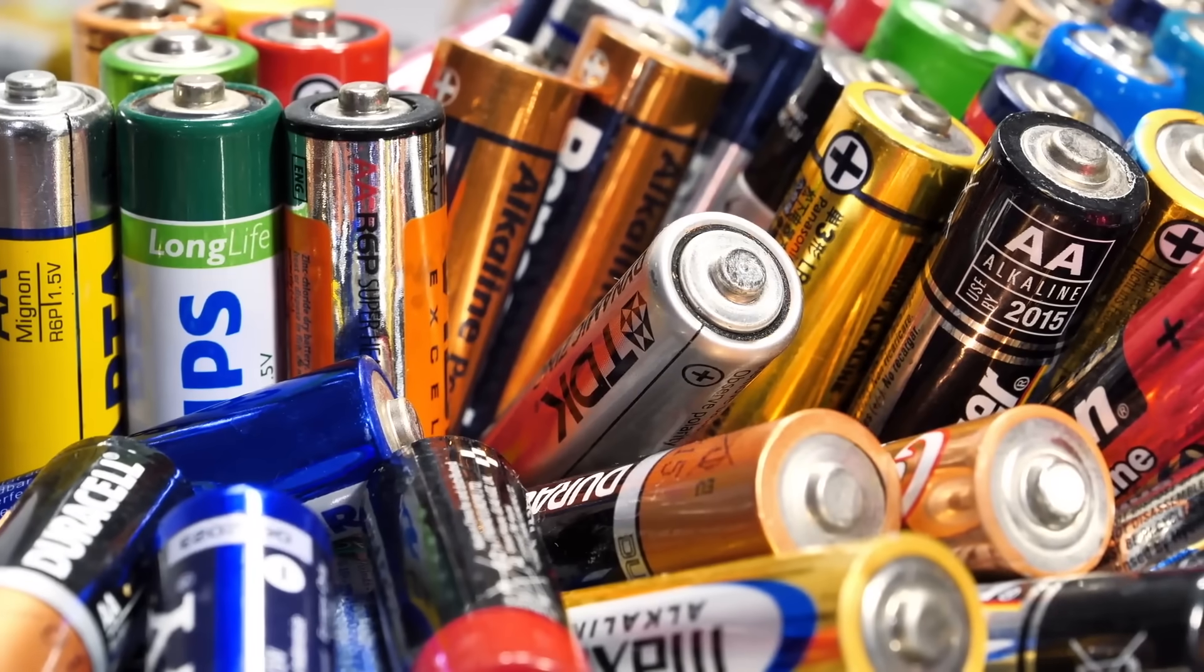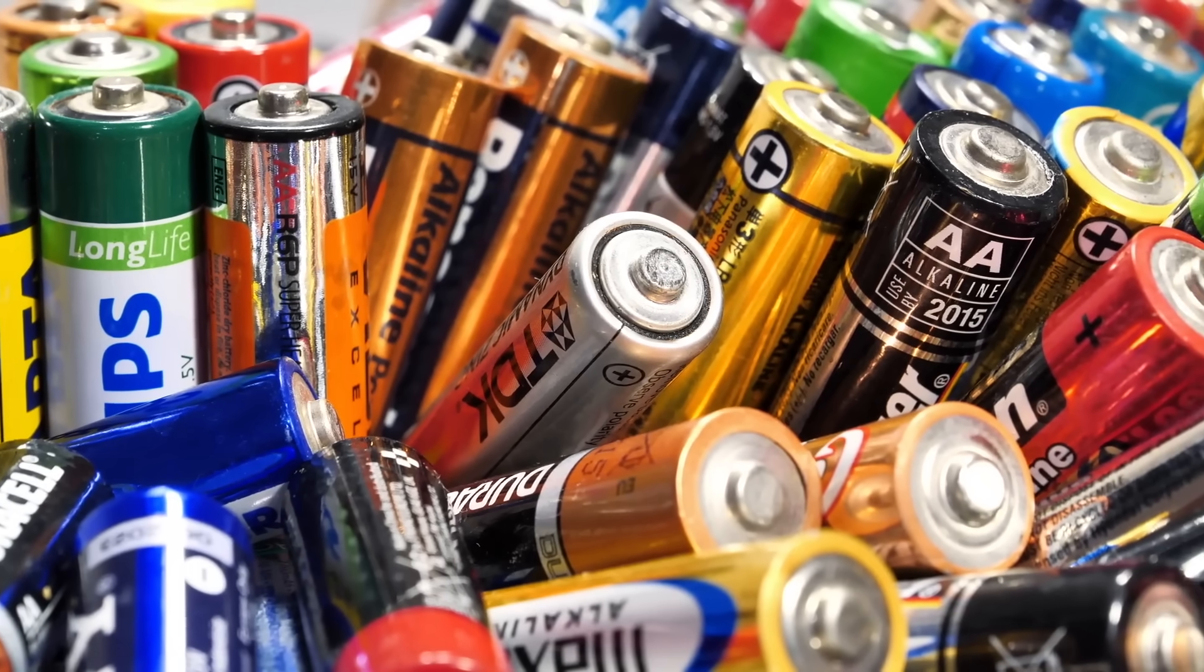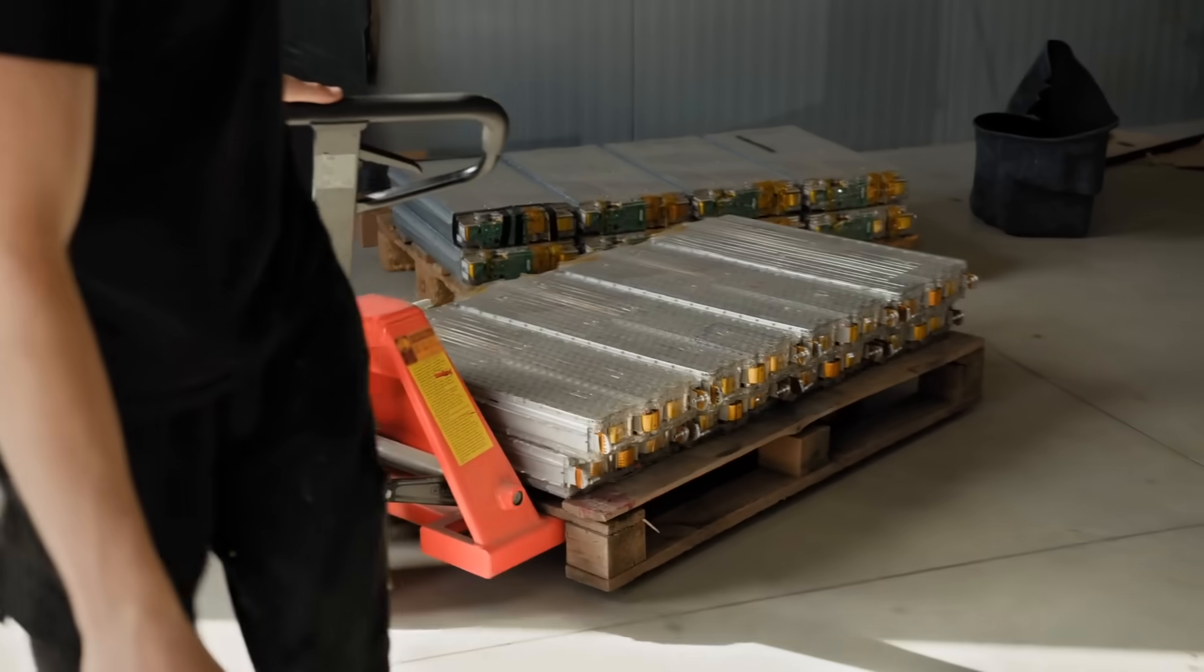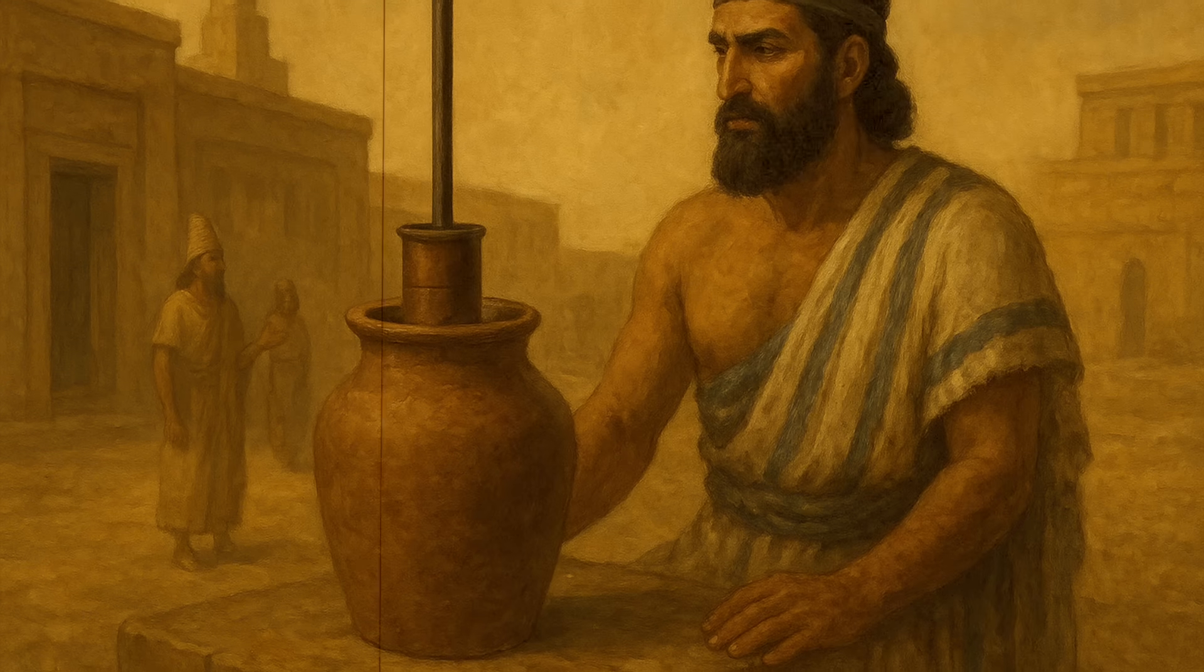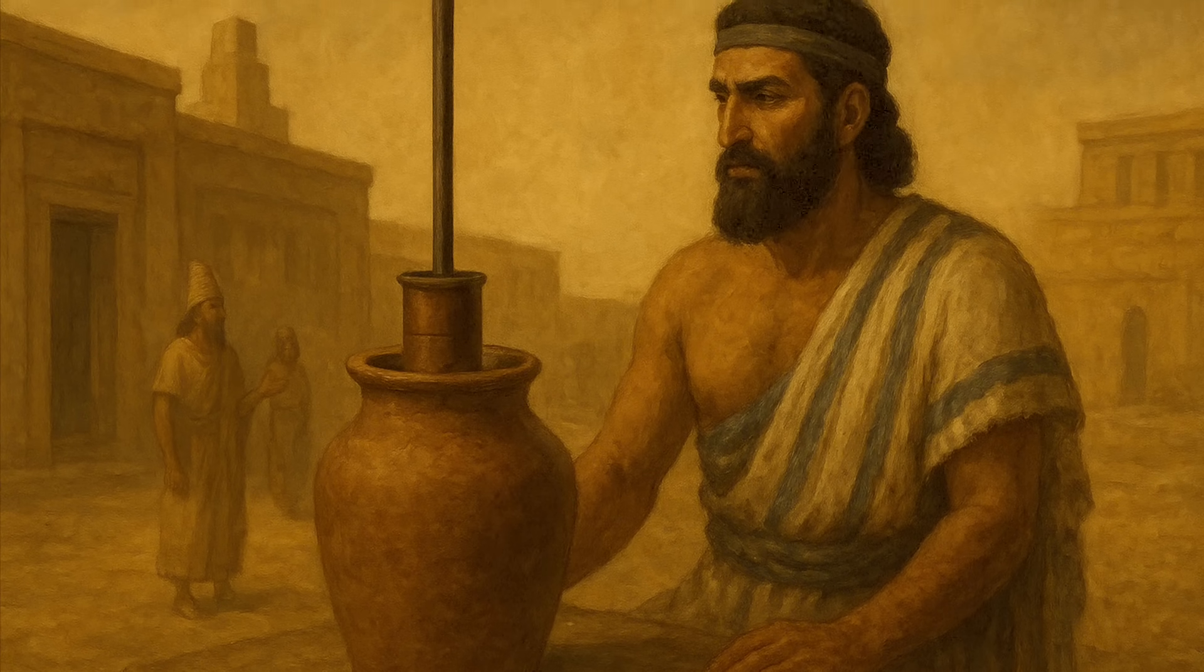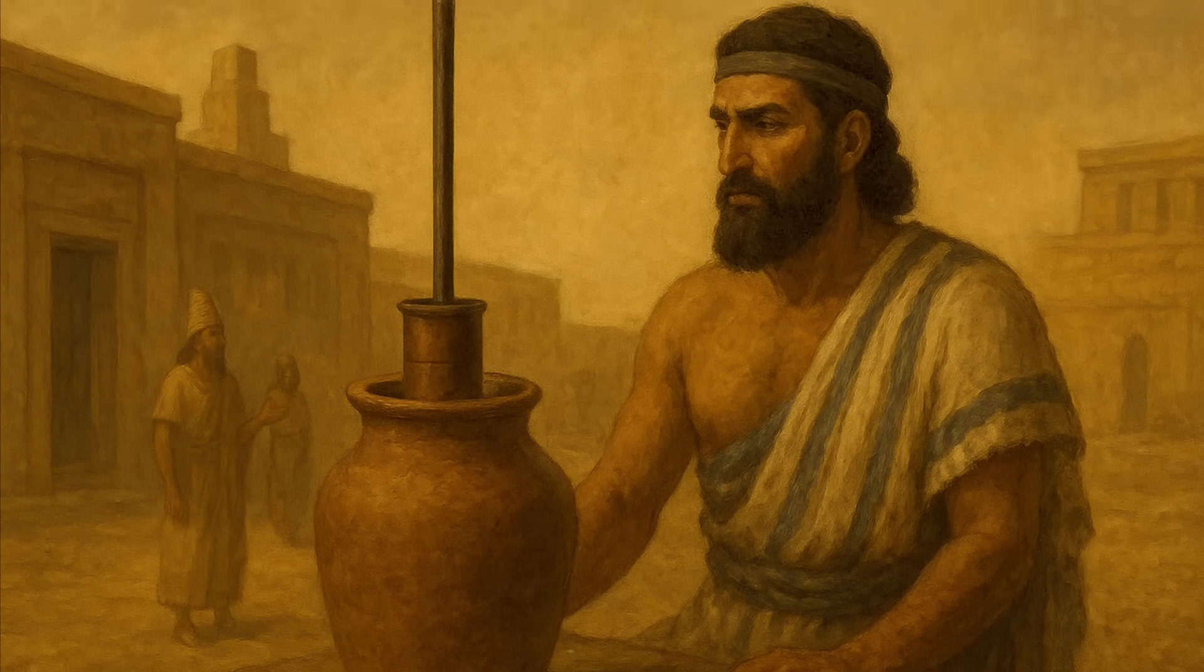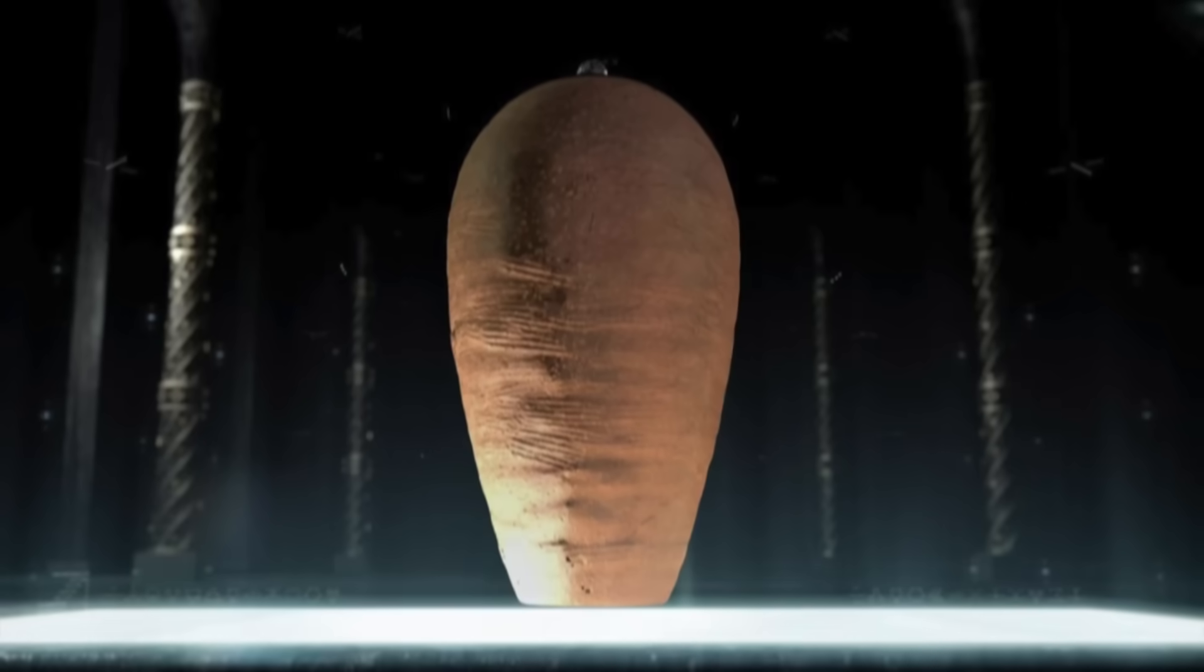When we think of batteries, we imagine the small cylinders that power our remote controls, or the massive lithium-ion packs that run electric cars. But what if I told you that a possible battery existed over 2,000 years ago, long before the concept of electricity was even understood?